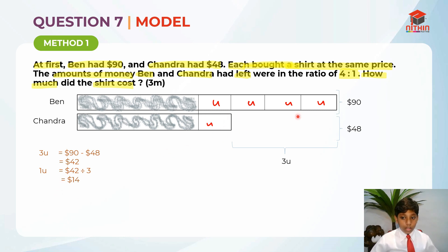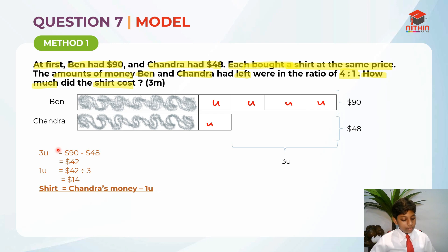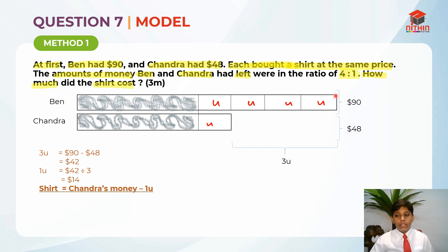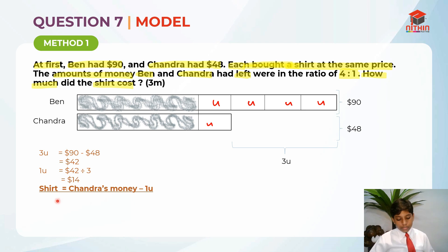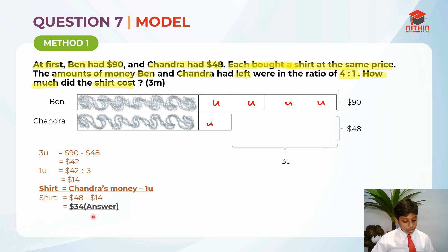They are asking us how much the shirt cost. You can use Ben's money: shirt equals Ben's money minus 4 units. Or you can use Chandra's money: shirt equals Chandra's money minus 1 unit. For easier calculation, I'll use Chandra's. Chandra has $48 and 1 unit is $14, so $48 minus $14 equals $34. That is the answer.